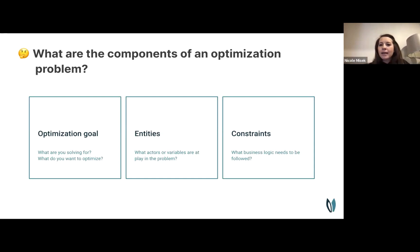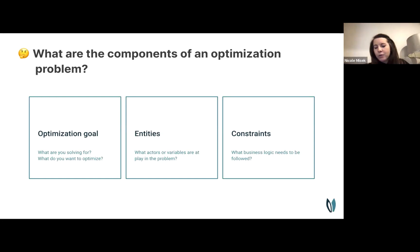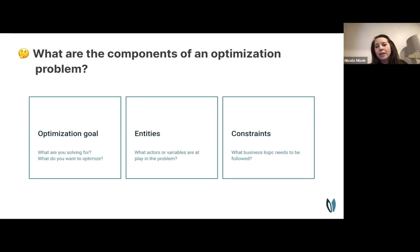Constraints are the core business logic that needs to be followed in your optimization model — things like drivers can't work more than eight hours, they need a break every four hours, or they can't have more than ten stops on a route.